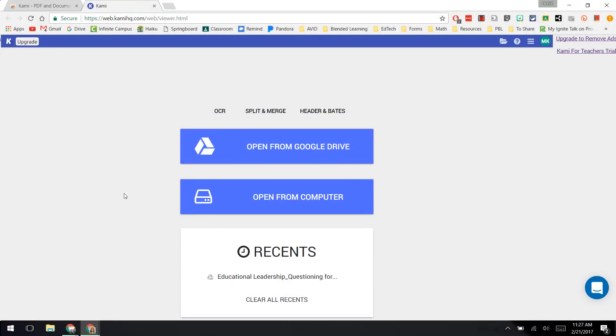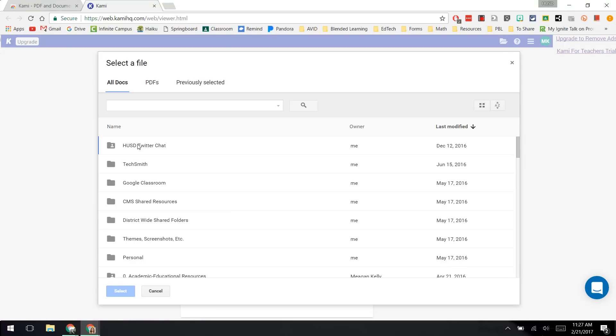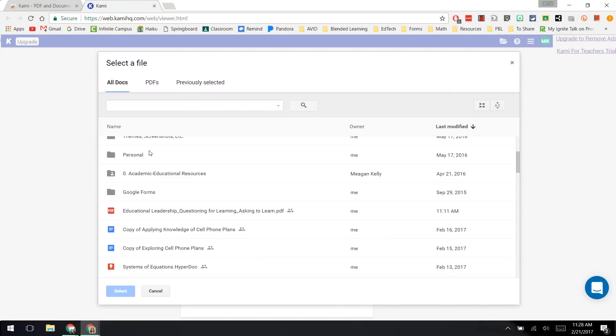Now from there you can choose your documents by either opening them from Google Drive or from your computer. For me, I have everything on my Drive, so I'm going to choose open from Google Drive and find a PDF that I have in my Drive.